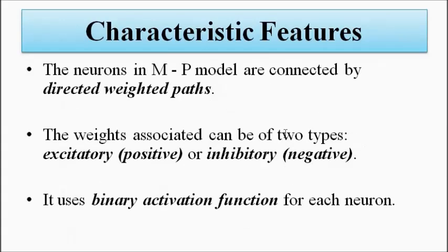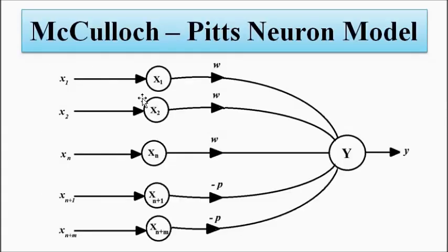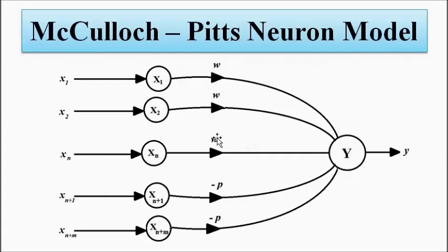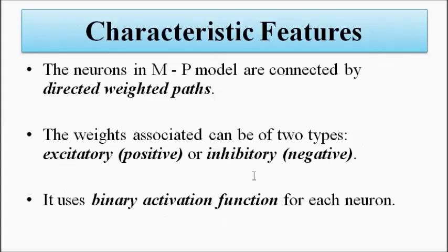As you can see, the weights associated with all the neurons, the input layer neurons and the output layer neurons in this MP model, we can divide it into two categories: excitatory which is positive w weights, and inhibitory, the minus p weights.